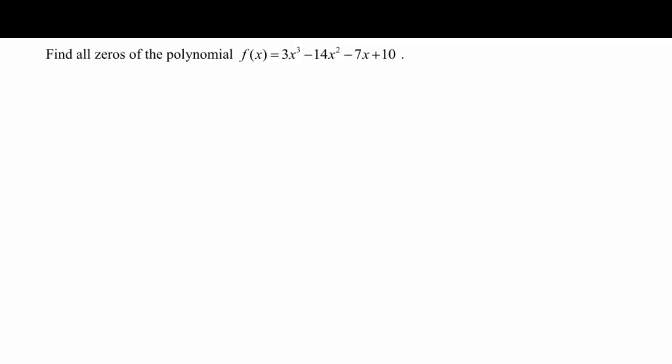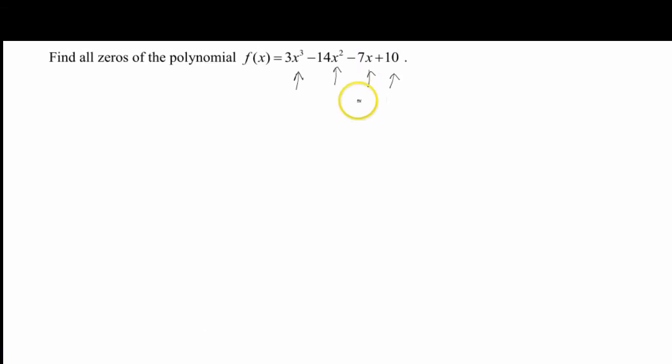The way I always like to start off these problems is taking a look at our polynomial, making sure I have all my terms in there. So I've got a third degree here, a second degree here, a linear term here, and then my constant term here. That's no problem at all, because if you're missing a term, sometimes it can throw things off.